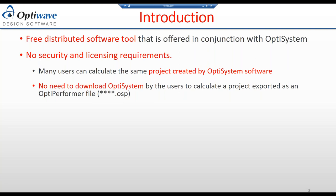There is no need to have OptiSystem on the machine where you want to run or use OptiPerformer. OptiPerformer can run on a separate machine from the one with OptiSystem software. The files use the format .OSB — you have the filename stored wherever you want on your computer.